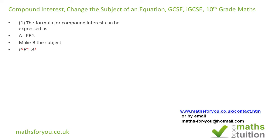We can write P to the power 1, R to the power N, and A to the power 1 — adding the power of 1 doesn't change the values at all. If we then raise both sides to the power 1 over N, that's what we have there.